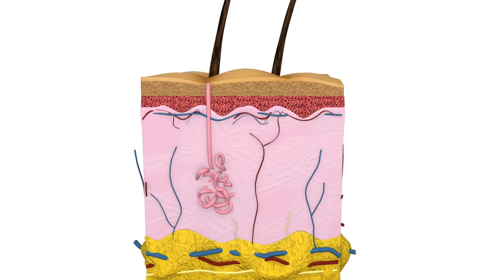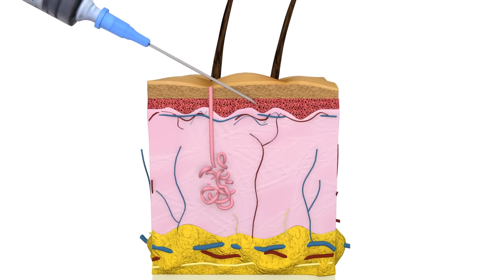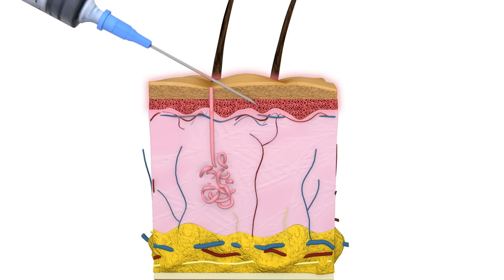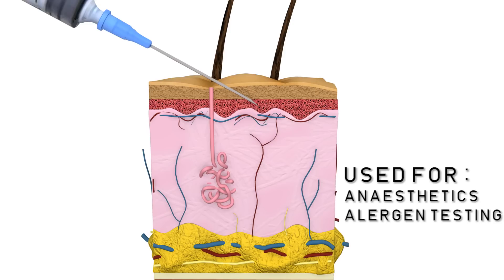The intradermal route is where medication is injected just below the top layer of the skin, the epidermis. As the injection site is not near any major muscles or blood vessels, the action of the medication is limited to the area of the injection site, and is therefore primarily used for anaesthetics or allergy testing.